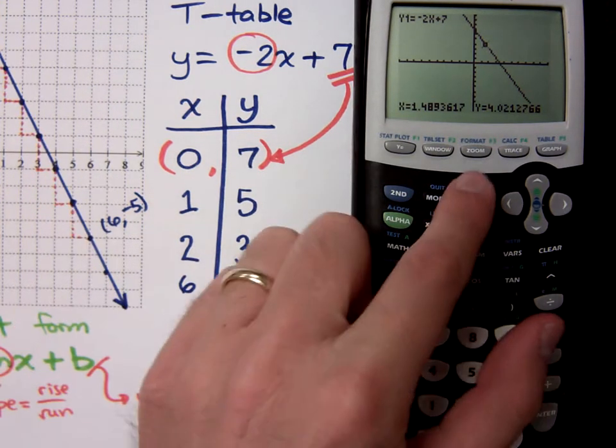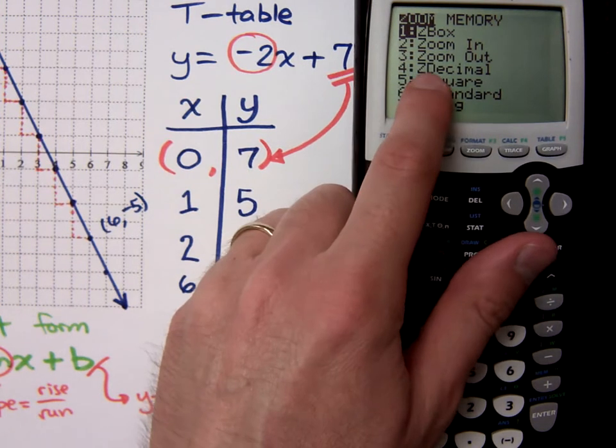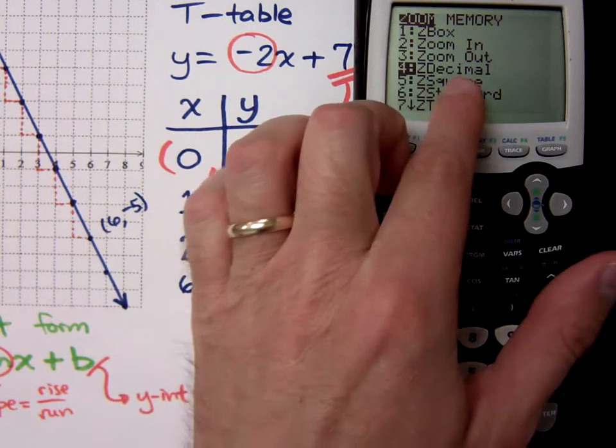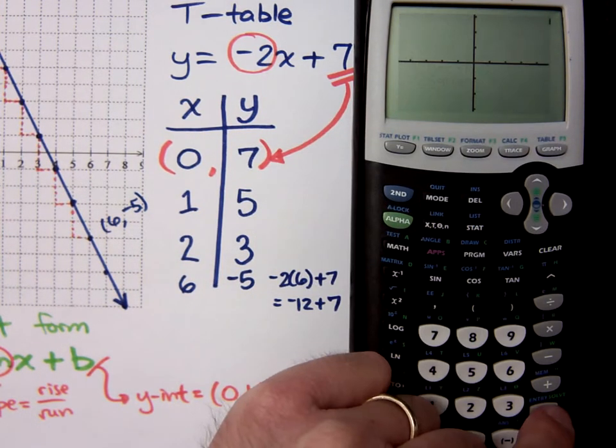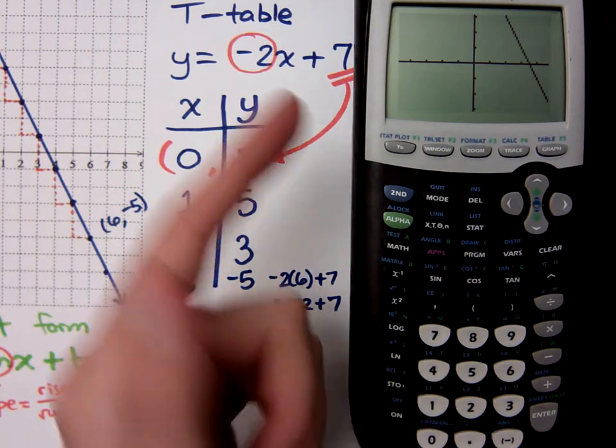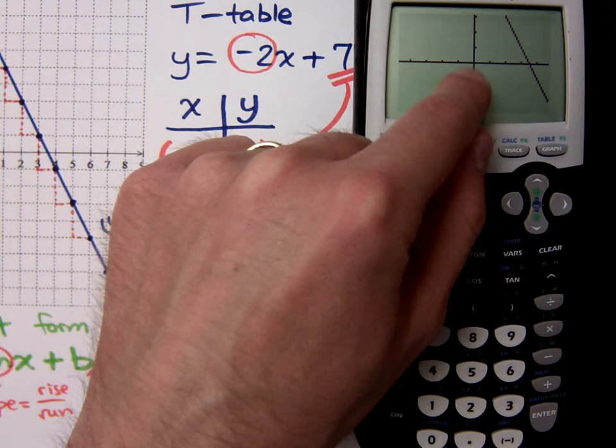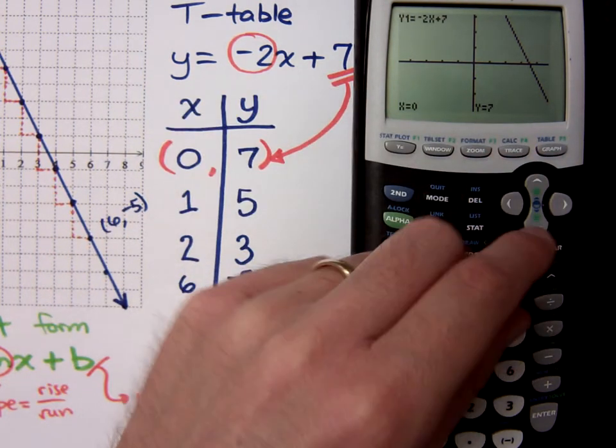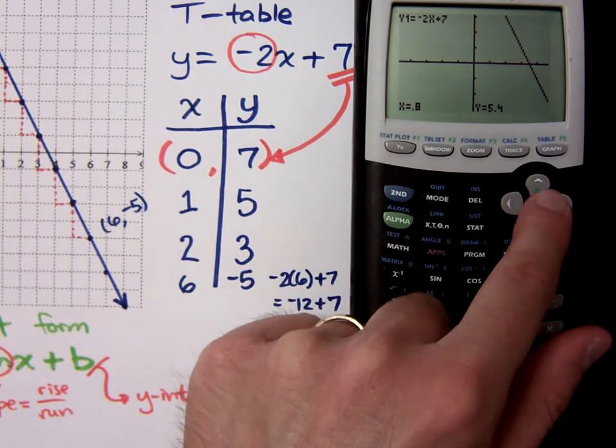Now, you can change that by going to Zoom. And if you do Z-decimal, Z-decimal is going to make every pixel on the screen to be worth 1 tenth. So now there's my graph. You see that the line itself doesn't show up. Because now every pixel, up, down, left, and right, is worth 1 tenth. So if I do my trace,